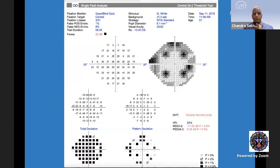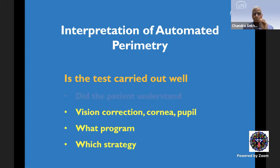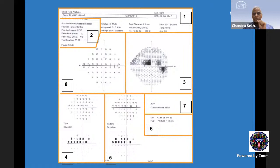The direct opposite: the first four cardinal points were not tested properly, showing zero decibel sensitivity. Once the patient understood the test and started doing it properly, you get relatively good values throughout the rest of the test. The questions of whether the correct refractive error has been given, the pupil size, and what program is used were covered in the basic talk, but we will give some clinical examples.